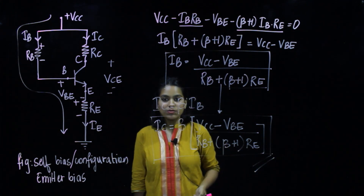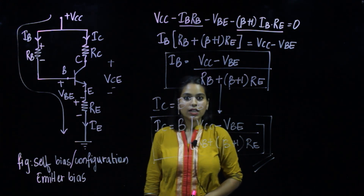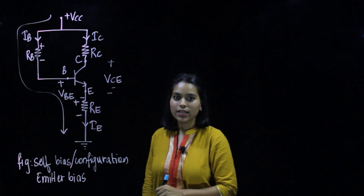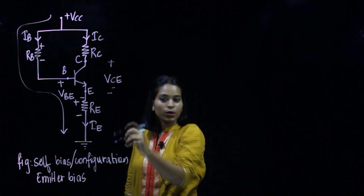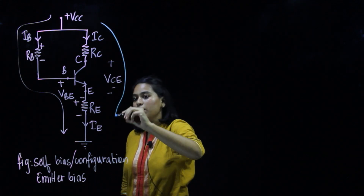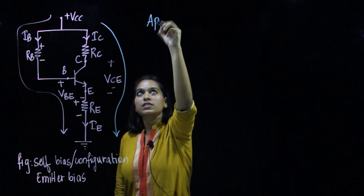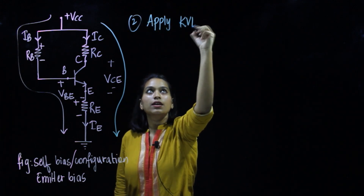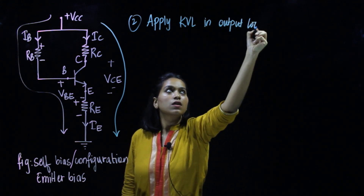Next we have to find VCE, which we will do by applying KVL on the output loop. To apply KVL in the output loop we look at the direction of current — it is flowing downwards. The first element is VCC.